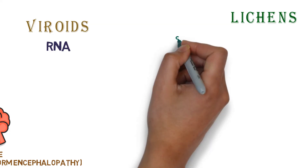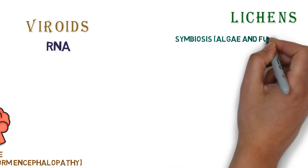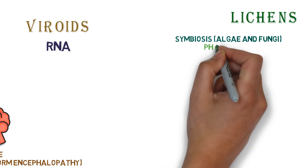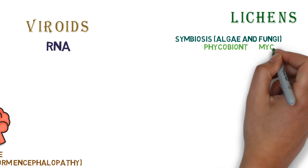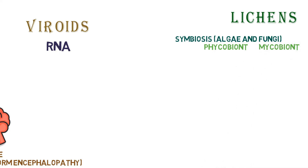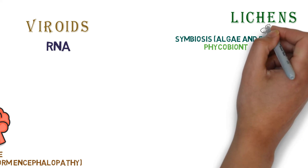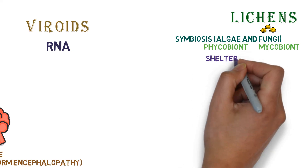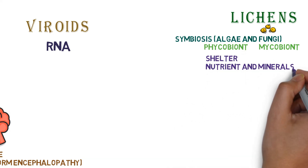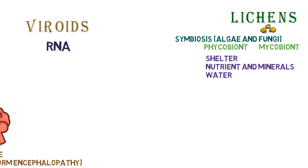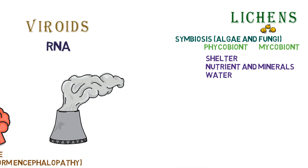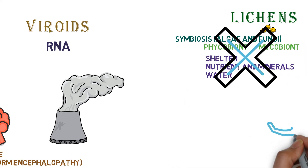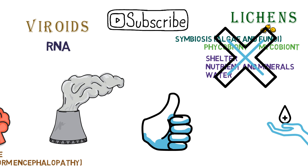Finally, we have lichens, which represent a symbiotic relationship — meaning mutual benefit — between algae and fungi. The algal component is called the phycobiont and the fungal component is called the mycobiont. Algae are autotrophic and provide food, while fungi are heterotrophic and provide shelter, minerals, and water. Lichens are found only in clean, non-polluted areas, and can therefore be used as bioindicators of pollution.